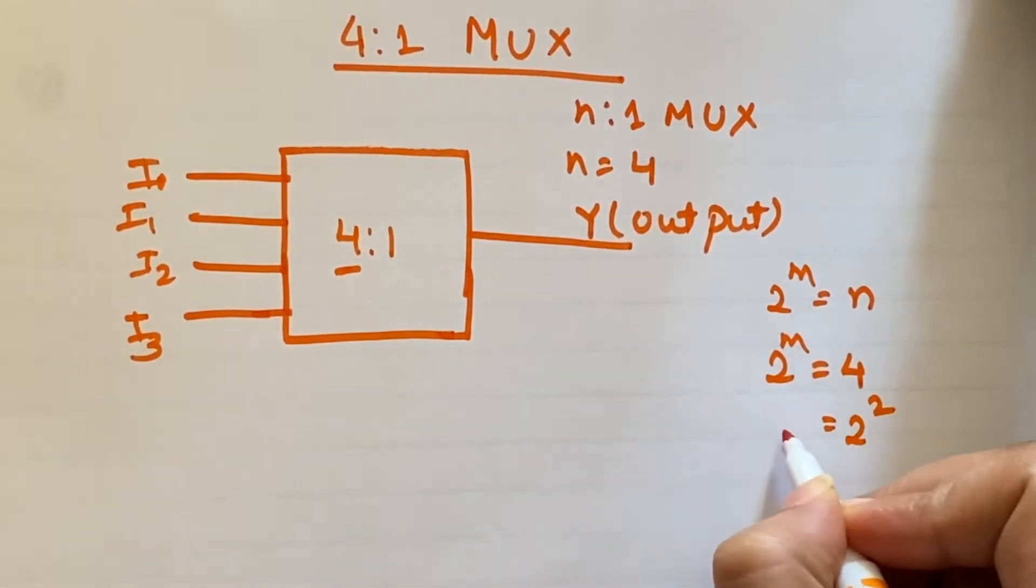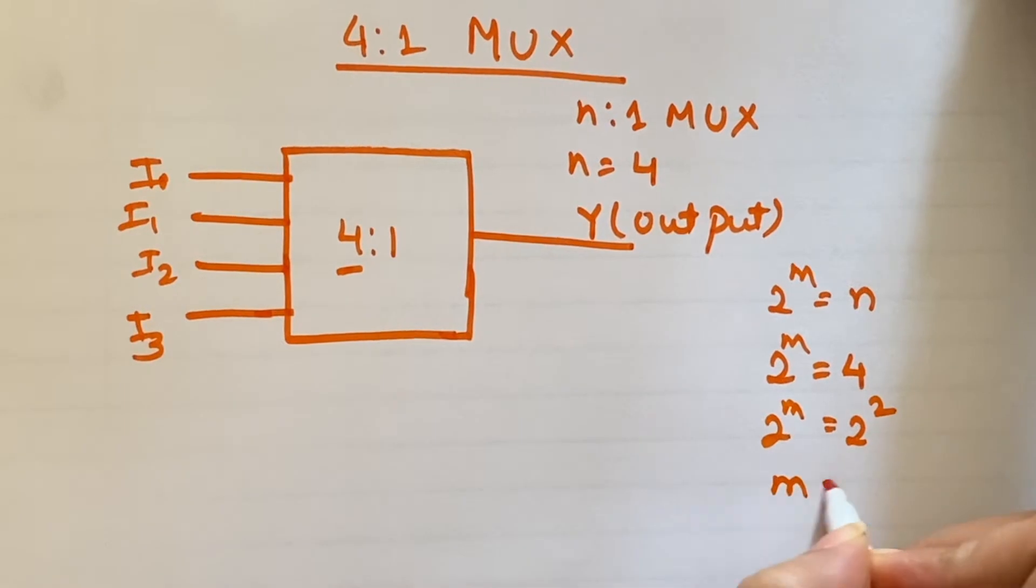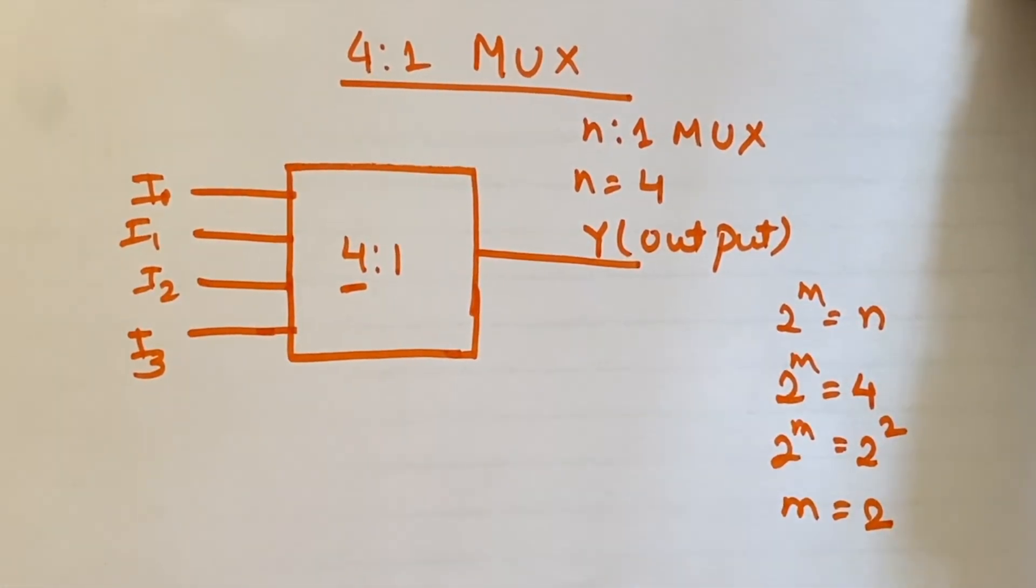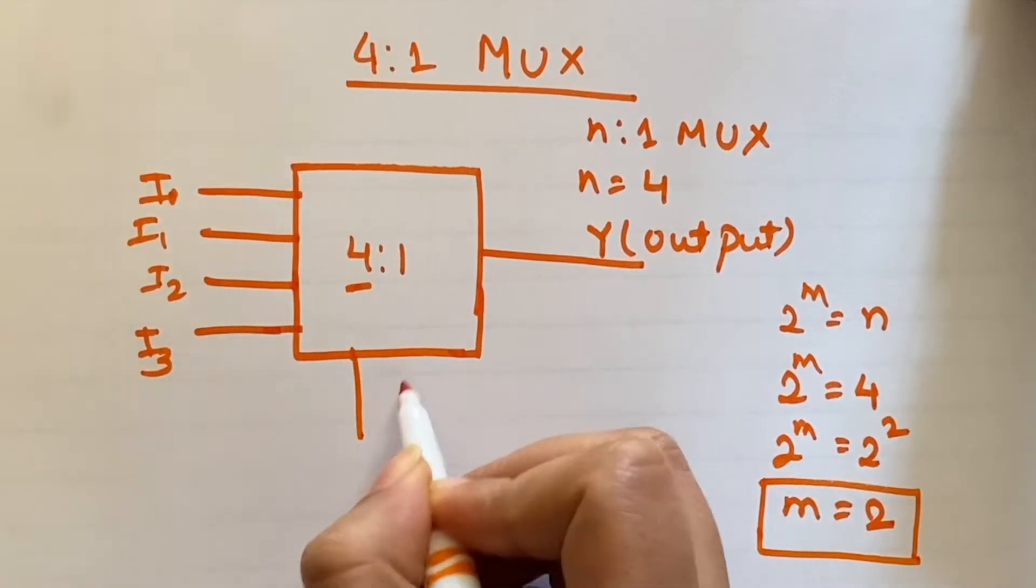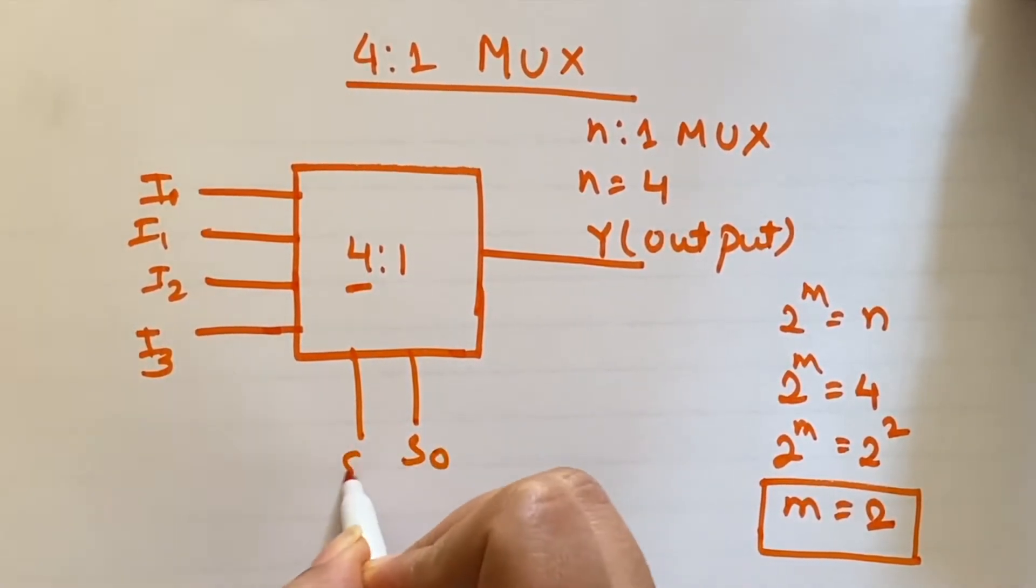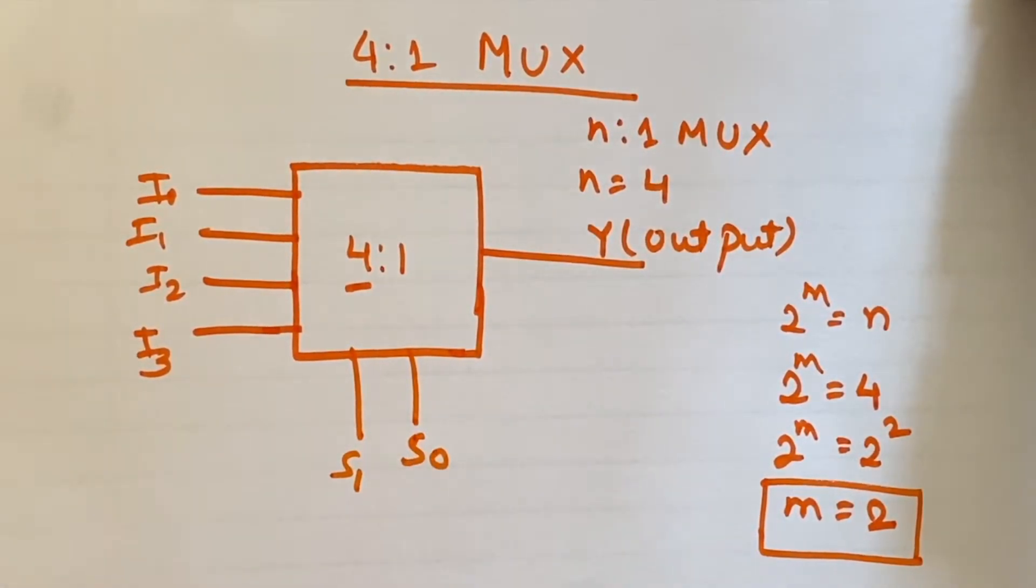So m equal to 2. So here there will be two select lines. Two select lines s0 and s1 will be two select lines.